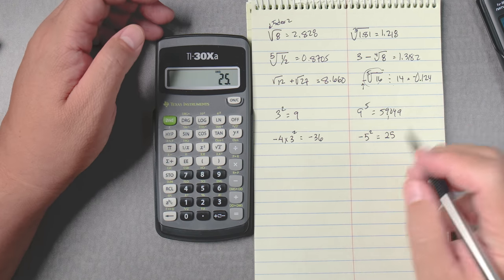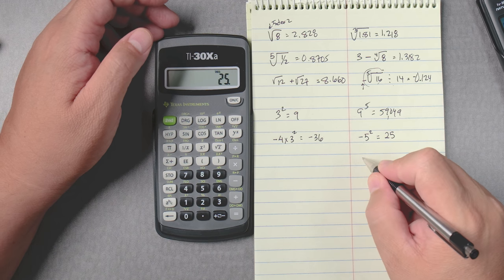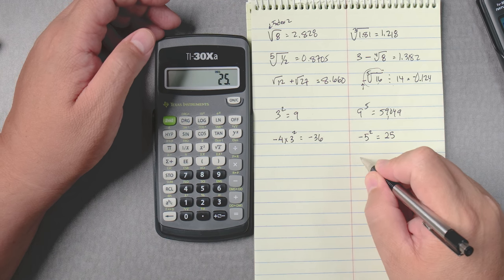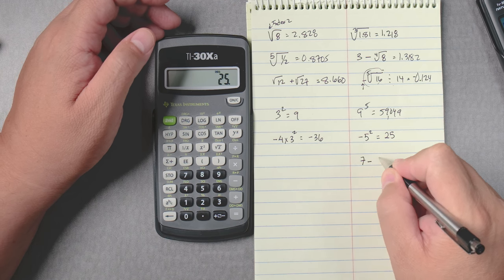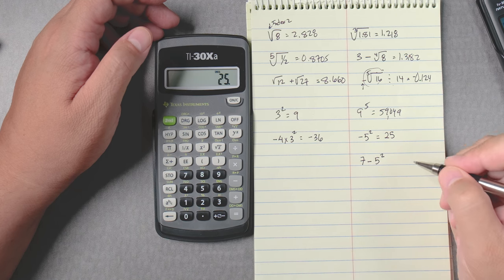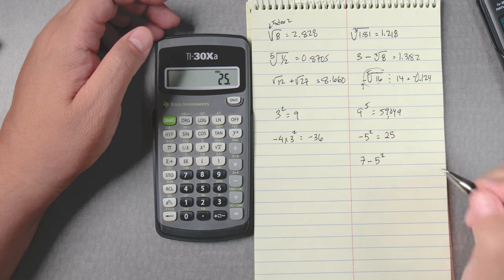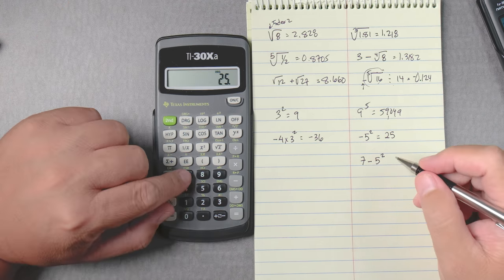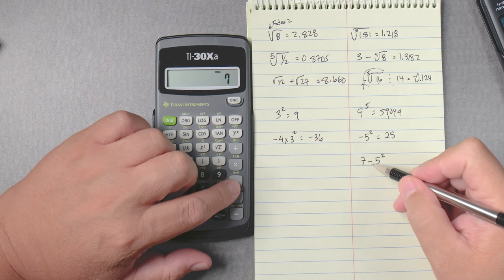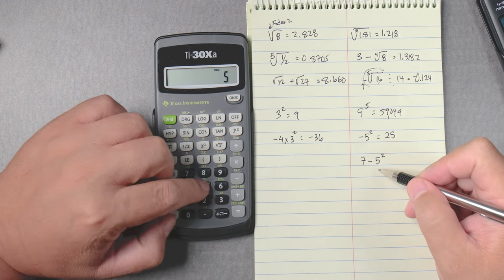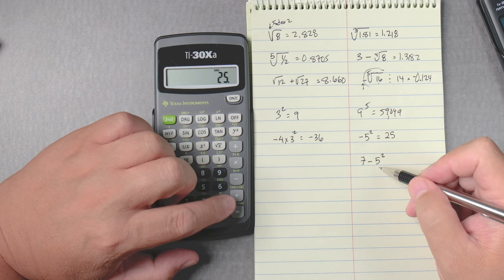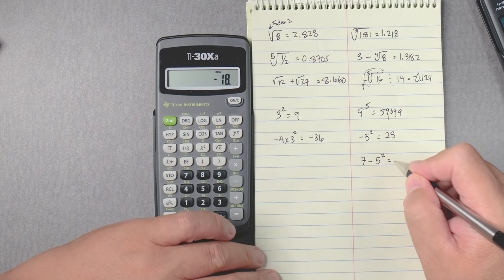Why is that interesting? Because if you do something like 7 take away 5 squared, this is going to be different. You press 7, this is a takeaway, 5 squared equals, that's going to give you negative 18.